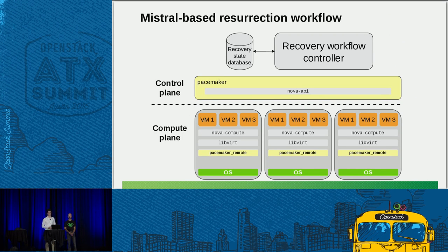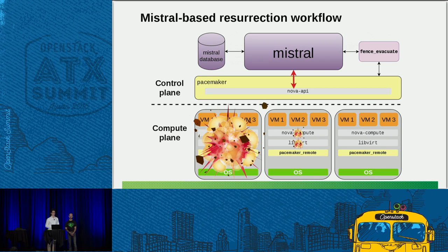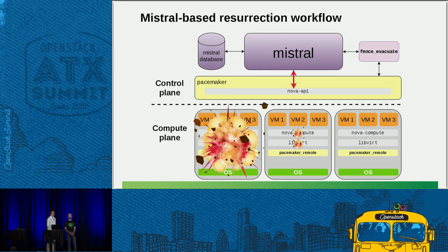Mistral fits into the same architectural diagram. Mistral acts as the workflow controller, it has a Mistral database, and there is a small fence-evacuate script that runs when the node is fenced. It can handle compute node failure and also nova-compute and libvirt failures. In the case of compute failure, the node is fenced as in the OCF agent solution, then the fence-evacuate script tells Mistral to launch the evacuate workflow. Mistral then communicates with the Nova API to evacuate the VMs. For nova-compute failure, it also uses the Pacemaker Remote feature, so it's essentially the same as the OCF agent solution in that respect.